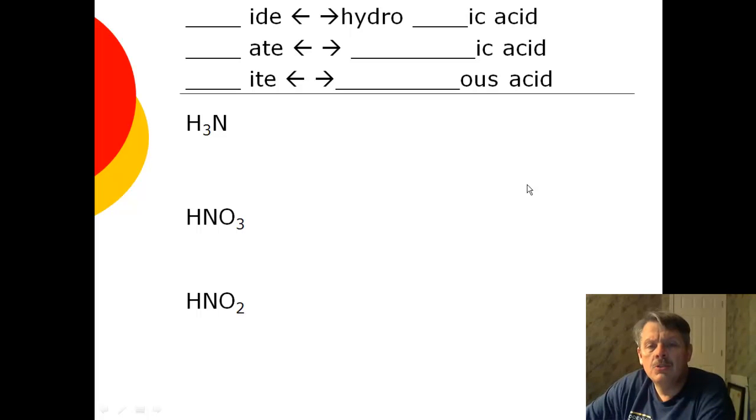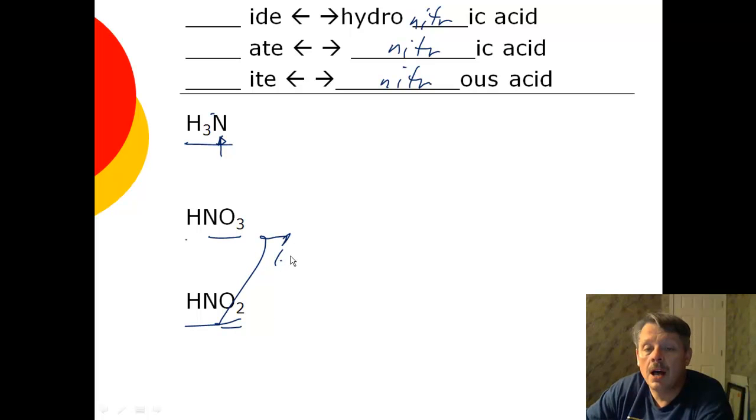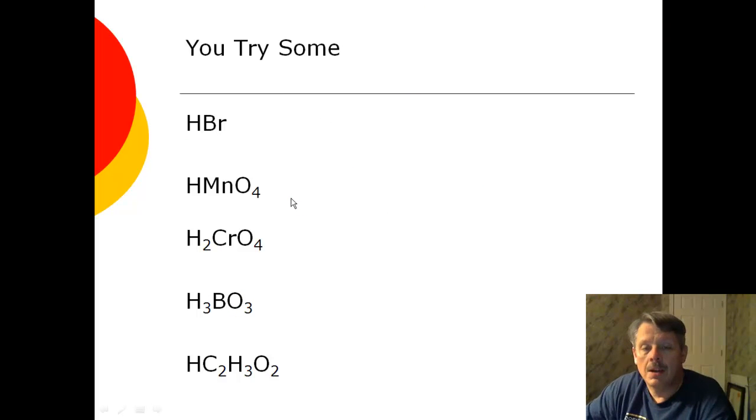Now, pause the video, see if you can name these, the rules are up on top. You're eventually going to have to do it without the rules on top, but right now, go ahead and try on your own. Okay, this first one here, the N is nitride, so that's this one. So this would be hydronitric, N-I-T-R, nitric, hydronitric. And this is hydrogen nitrate, so this would be nitric acid. And your other one would be nitrous acid, because this is nitrite. This is hydrogen nitrite. Again, you're looking at the ion, at the anion, and the anion drives what type of acid it is. All based on the name of the anion. That's the name of the anion up there. You go ahead and try some. See if you can do it.